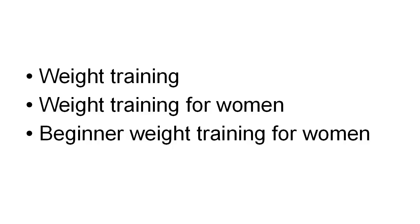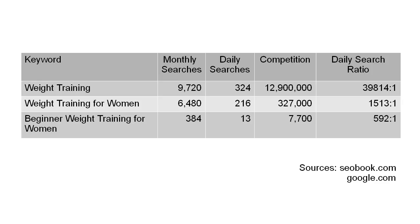That can be to your advantage. If we look at this table here, you can see the keywords, the number of monthly searches in Google, the number of daily searches done in Google, the competition — that's the number of sites indexed in Google for that particular keyword — and the daily search ratio, which is the competition divided by the number of daily searches. If everything was equally weighted, those are the probabilities that someone doing a search for that keyword will reach your site.